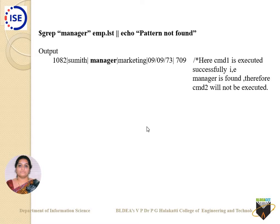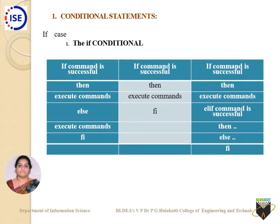Let us try using these things in our shell programming. Logical AND and logical OR go well with conditional statements — also called control block statements. One such conditional statement you have come across in C or Java is the if statement. The pattern is: if a command is successful, then execute a series of commands; else execute another series of commands, and then end the if.